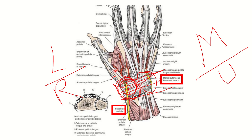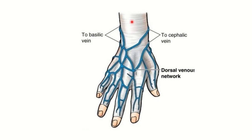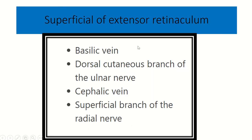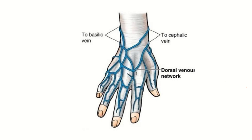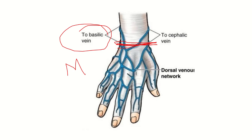We can see the tendons which are entering into the hand — their walls are located just below the extensor retinaculum, because tendons need contraction and relaxation and must be fixed by a structure, which is the extensor retinaculum. In this picture we can see this whitish fiber as the deep fascia and the extensor retinaculum. We can also see medial and lateral structures such as the basilic vein on the medial side and the cephalic vein on the lateral side.